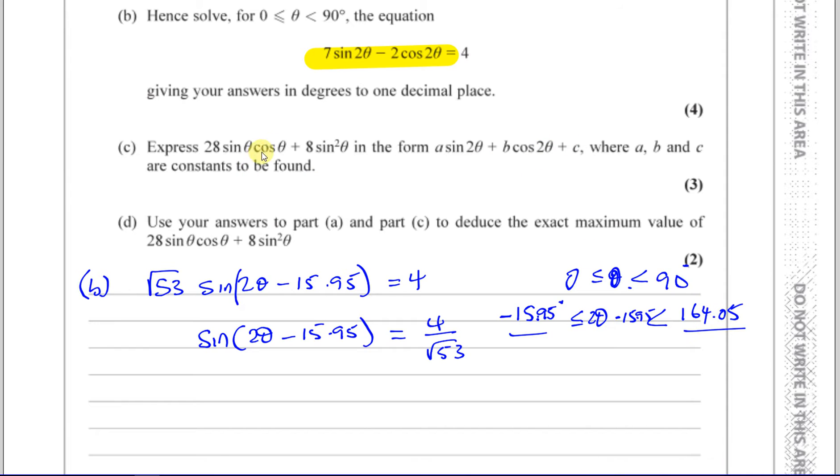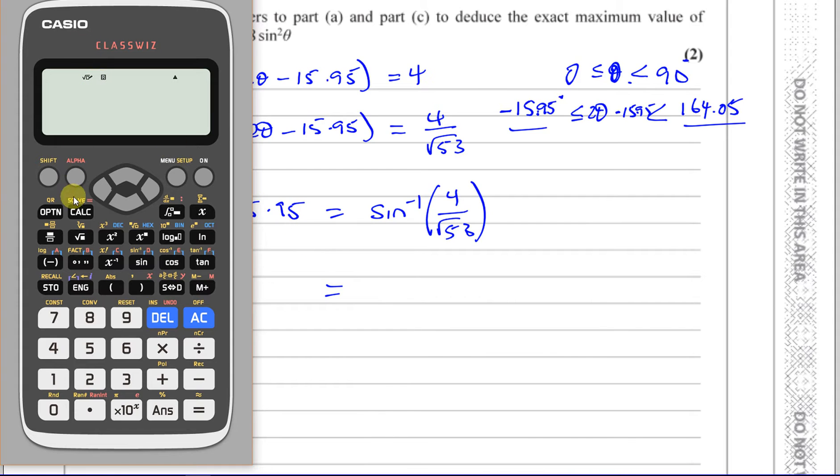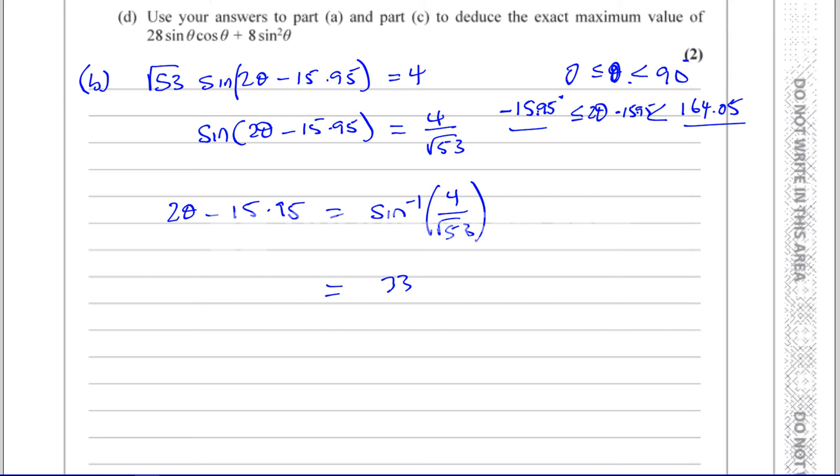Now we're going to press shift sine of 4 over √53. So 2θ minus 15.95 is equal to inverse sine of 4 divided by √53. That will give us the first solution from the calculator. I've got to make sure I'm in degree mode, and the calculator right now is in radian mode, so I must change it into degree mode. And then I continue, so inverse of sine, so shift sine, 4 divided by the square root of 53. There we are, and that gives me 33.328. So I have 33, let me try and make it neater, 33.328.